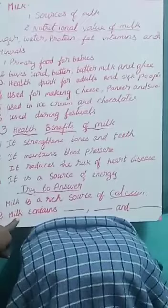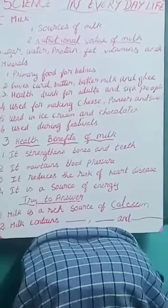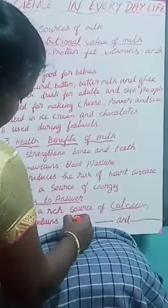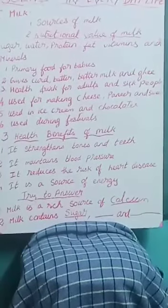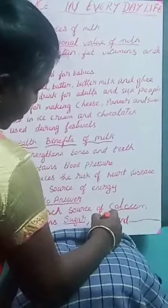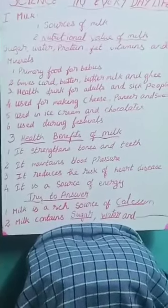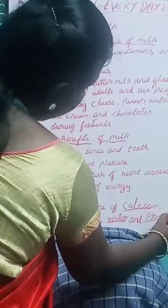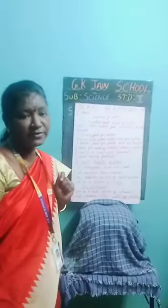See the second question: Milk contains dash, dash, and dash — what are the things contained by the milk? Milk contains sugar — S-U-G-A-R. Sugar in one dash. And next, water — W-A-T-E-R. And next, protein — P-R-O-T-E-I-N. From this activity, children, you understand what is milk. Thank you.